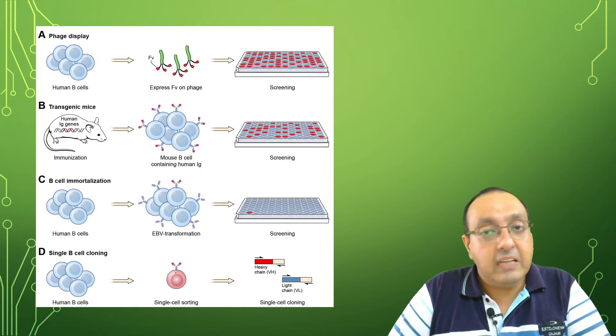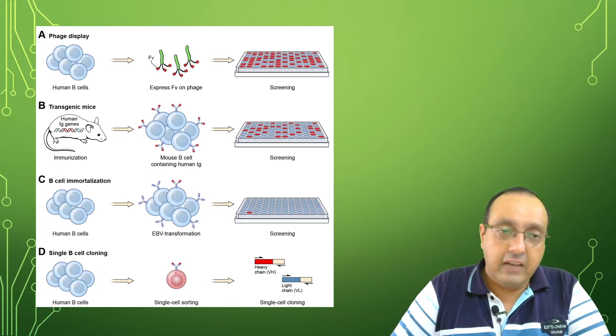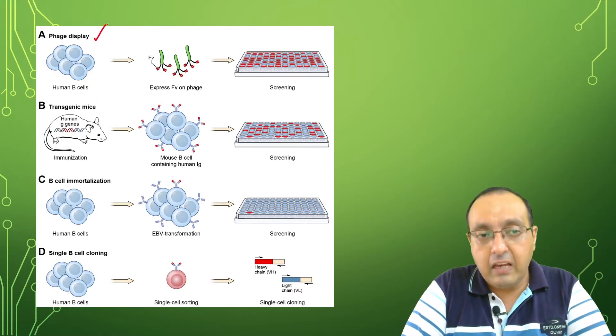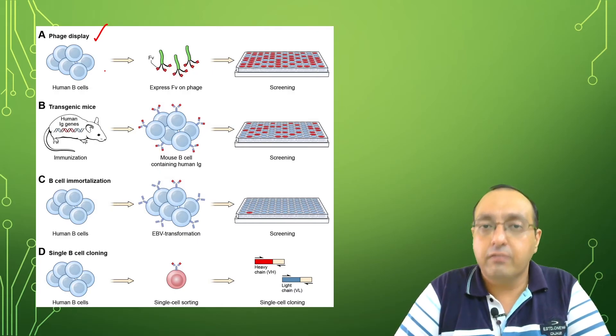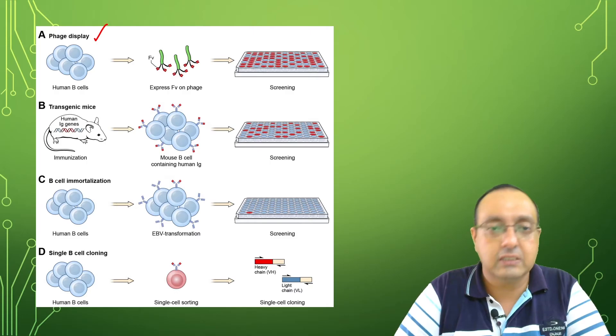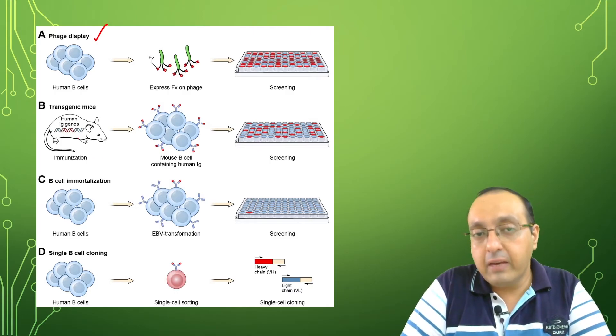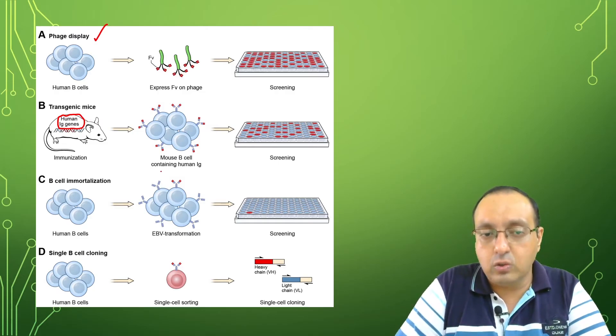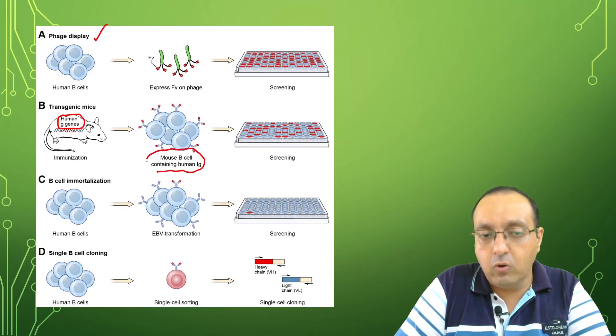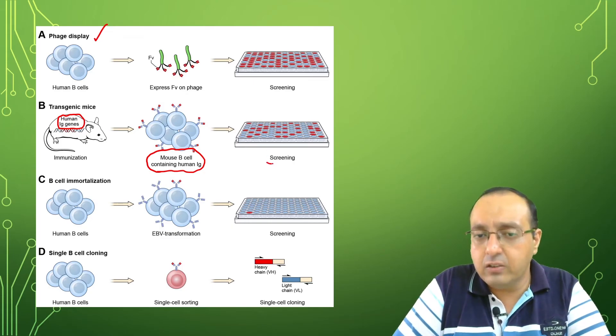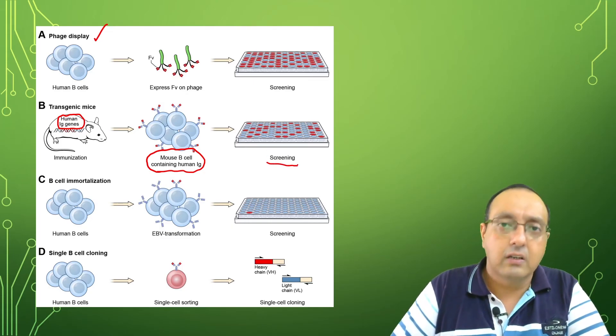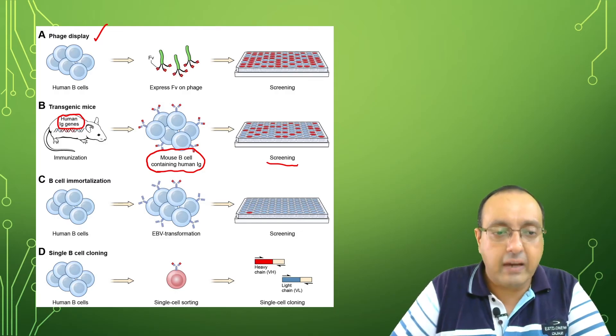Recently many improvements in this technology have been made. Using phage display, we can screen for lots of different antibody fragments for monoclonal antibodies. We can clone and make transgenic mice carrying human immunoglobulin genes, then inoculate these transgenic mice with our antigen of interest so they produce human immunoglobulin. Then we can do screening and isolate our monoclonal antibody-producing cells from these mice.